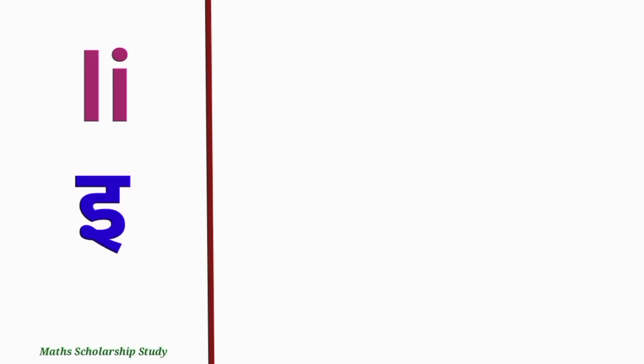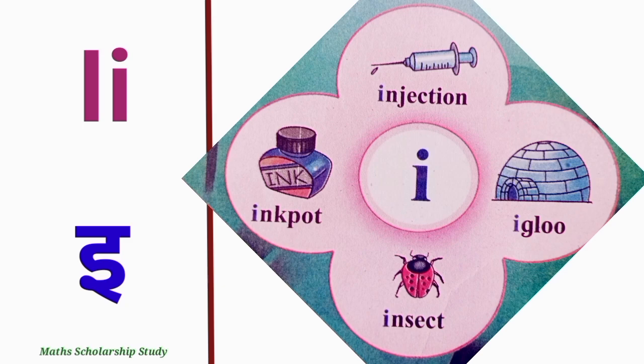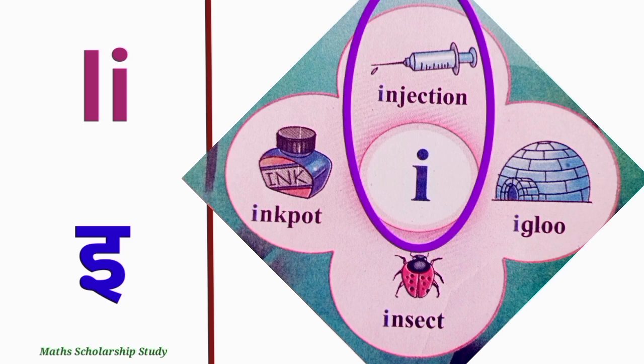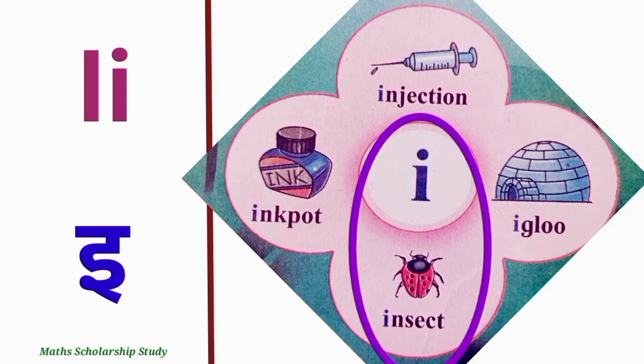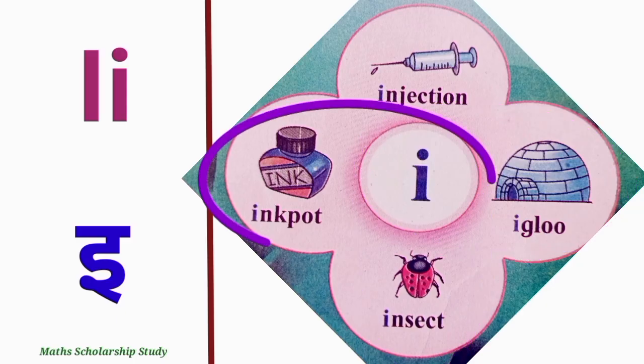Letter I. I says the short i sound. I for injection, I for igloo, I for insect, I for ink pot.